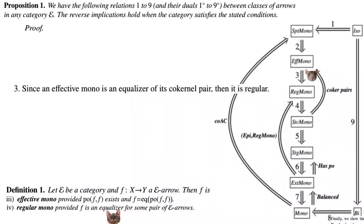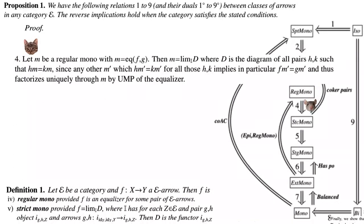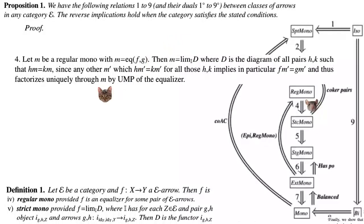For (3): since an effective mono is an equalizer of its co-kernel pair, it is regular. For (4): let M be a regular mono with M equal to the equalizer of F and G. Then M is the limit over I of D, where D is the diagram of all pairs (H, K) such that HM = KM, since any M' with HM' = KM' for all such H, K implies in particular FM' = GM', and thus M' factorizes uniquely through M by the universal mapping property of the equalizer.